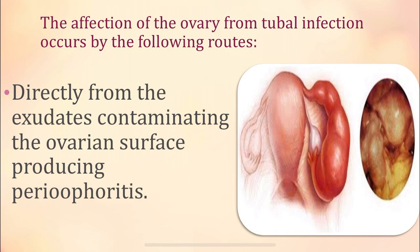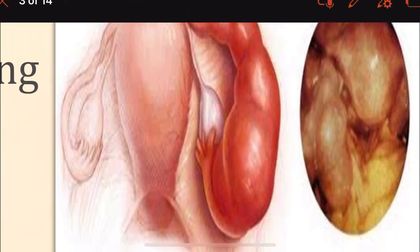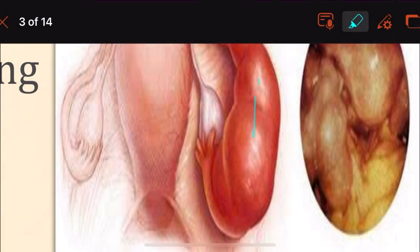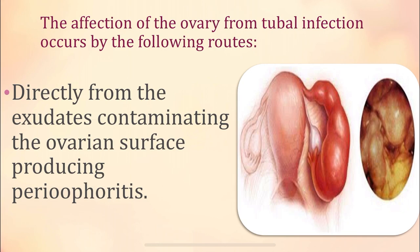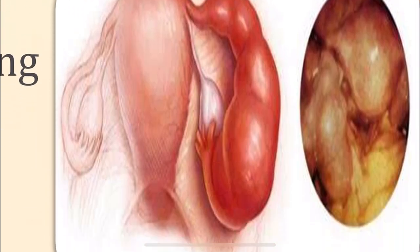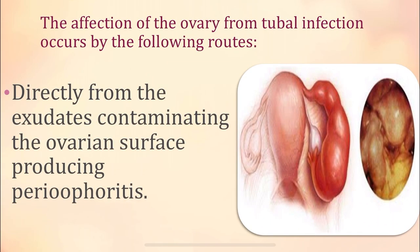The infection of the ovary from the tubal infection occurs by the following routes. The tubes are the ones which will be affected first, and then from the tube, the infection spreads to the ovaries. The first route is direct — the exudate coming out of the fallopian tube contaminates the ovarian surface, producing peri-oophoritis, which is the inflammation of the tissues around the ovary.